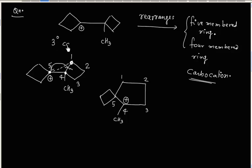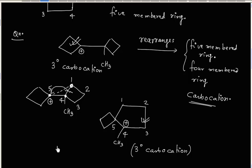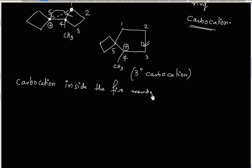Initially we also had a 3° carbocation. Now why does this rearrangement take place? Because the carbocation is now inside a 5-membered ring, whereas initially it was inside a 4-membered ring. The carbocation inside the 5-membered ring is less strained and more stable.